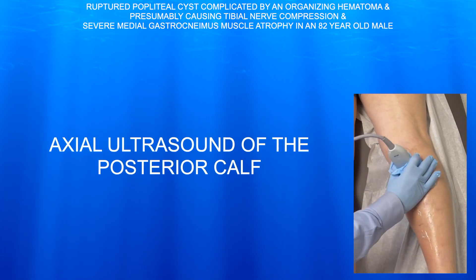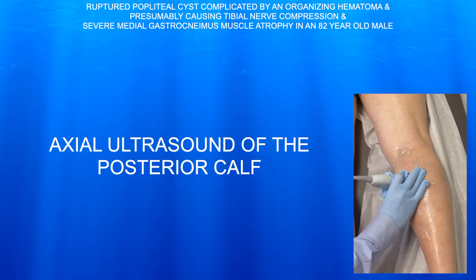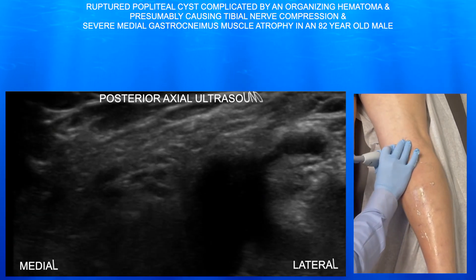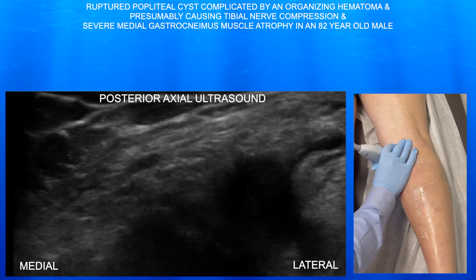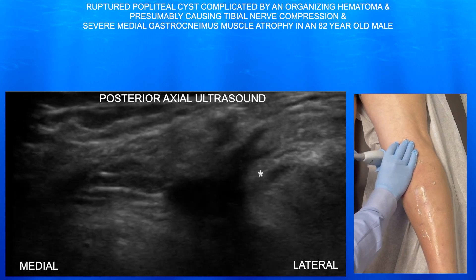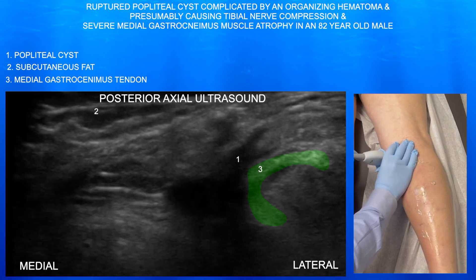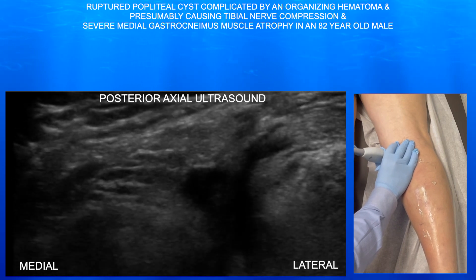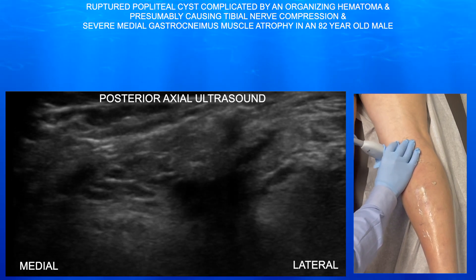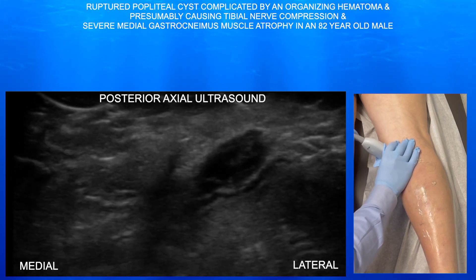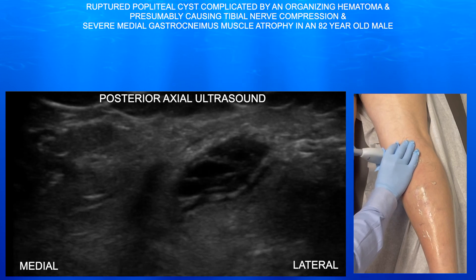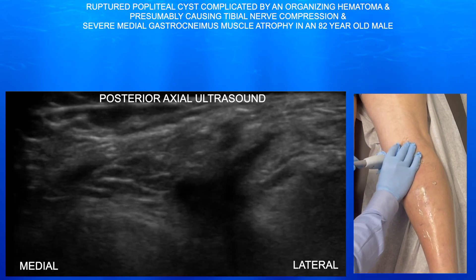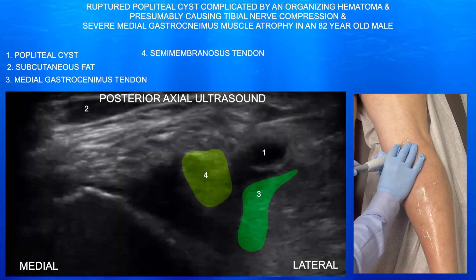Here we're going to look at the cyst in an axial plane. You can see the medial gastrocnemius tendon to the right, and that's essentially like a boomerang-type shape. You don't see the semimembranosus tendon here secondary to anisotropy. Here you can see the cyst going in and out of view, again with some organization and hyperechoic stranding within that cyst.